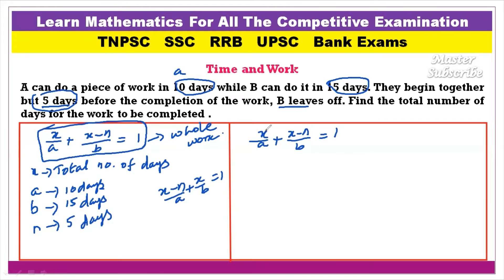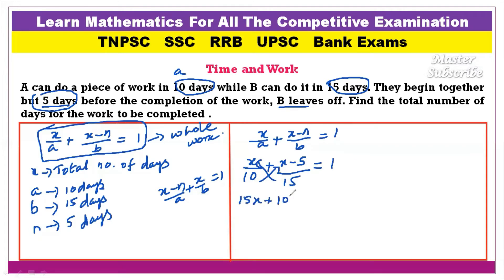Now substituting the values: x divided by 10, plus x minus 5 divided by 15, is equal to 1. Now let's cross multiply: 15 times x gives 15x, plus 10 times x minus 5 gives 10x minus 50. The denominator multiply gives 10 times 15 equals 150, which is equal to 1.